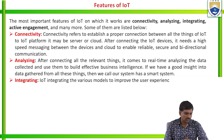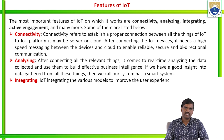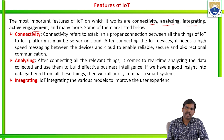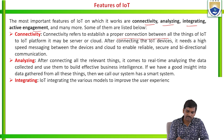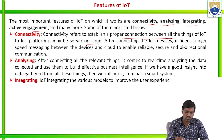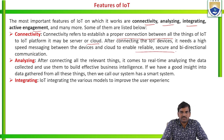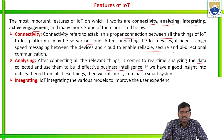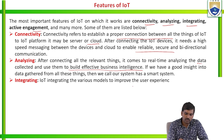The features of IoT include connectivity, analyzing, integrating and active engagement. Connectivity refers to establishing a proper connection between all things of IoT to the IoT platform — it may be a server or cloud. After connecting IoT devices, it needs high-speed messaging between the devices and the cloud to enable reliable, secure and bi-directional communication. Analyzing: after collecting all relevant data, it comes to real-time analyzing and using them to build effective business intelligence. Integrating: IoT integrates various models to improve the user experience.